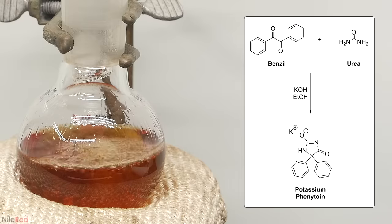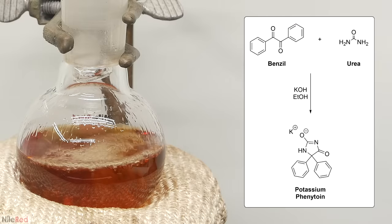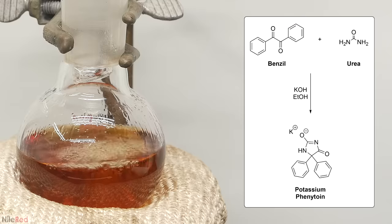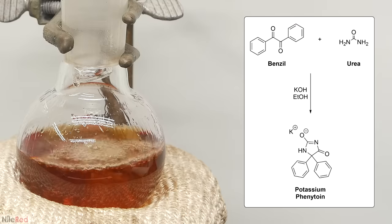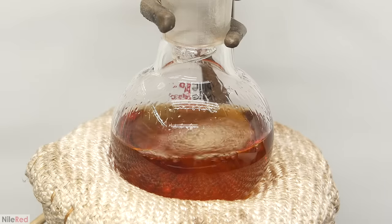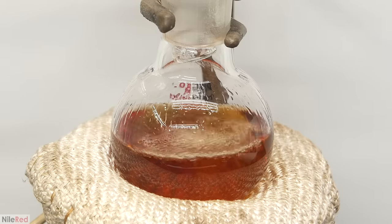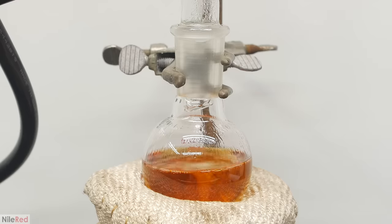The major reaction that was going on here was between the benzyl, the urea, and the potassium hydroxide, to make potassium phenytoin. The mixture initially got a lot darker, and this was only about 20 minutes in. At some point though, it started to lighten up again, and this is what it looked like near the end.